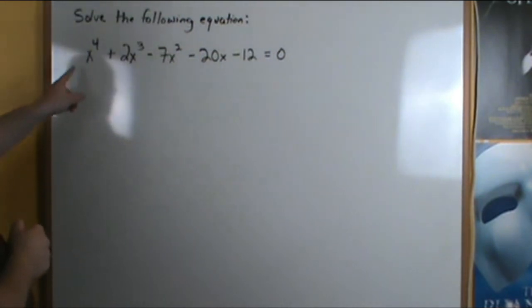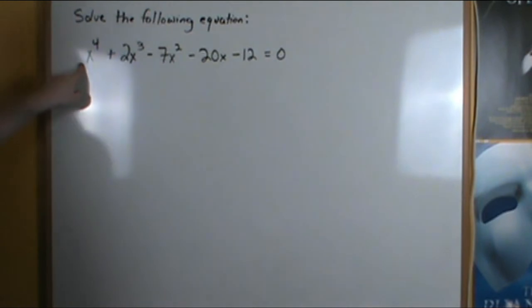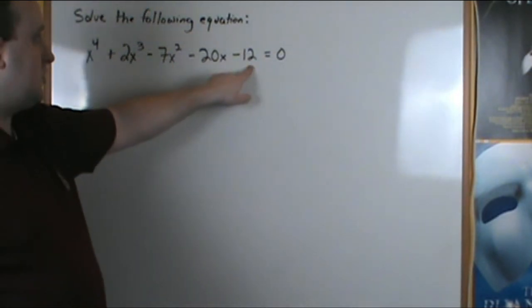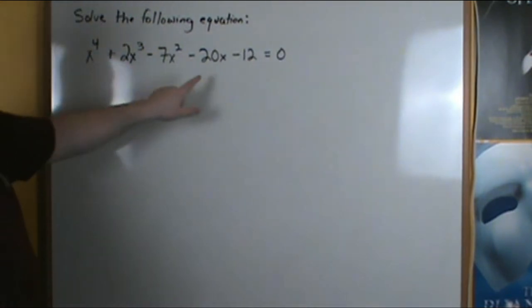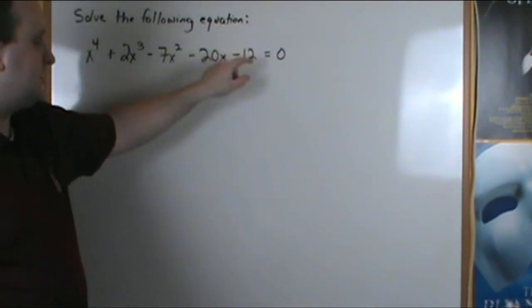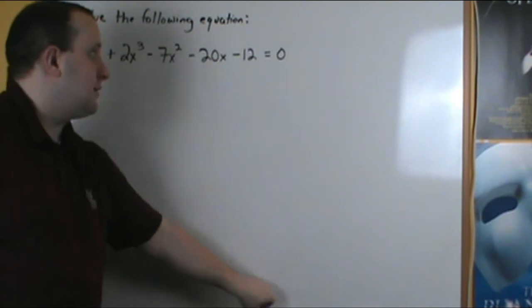So first off, we have this equation here: x to the fourth plus 2x cubed minus 7x squared minus 20x minus 12 equals zero. From what we know, our leading coefficient is 1 and our constant term is negative 12. Since our leading coefficient is 1, then we only have to list our possible factors of the last term, which is negative 12.